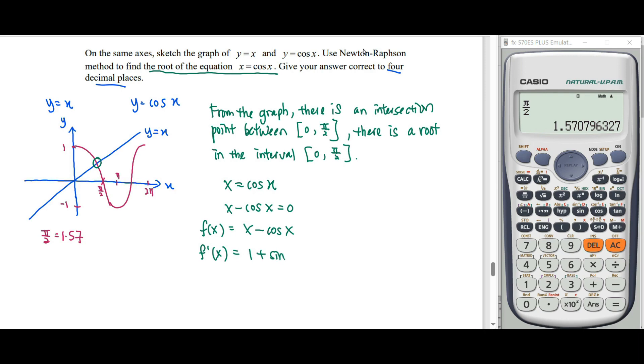We start with the initial value. By using the graphical method, we know that we have a root between 0 and π over 2. So let our initial approximate value be, let's say, 0.5, which is within the interval of 0 and π over 2.